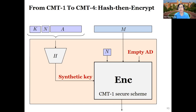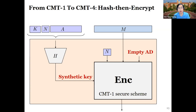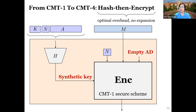Our first step is to hash K and AD to derive a synthetic key, and we then use that synthetic key to encrypt the message M. Because the base AE scheme commits the synthetic key, the ciphertext is a commitment of K and AD if the hash function is collision resistant, and as a result the overall construction has commit-four security. Importantly, the AD is processed only once because in the encryption we encrypt with an empty AD. So the hash-then-encrypt transform has no ciphertext expansion, and its overhead is optimal: commit-four demands hashing the AD whereas commit-one doesn't, so the hashing cost of K and AD is somehow unavoidable.